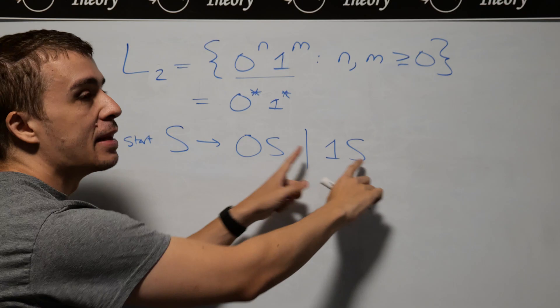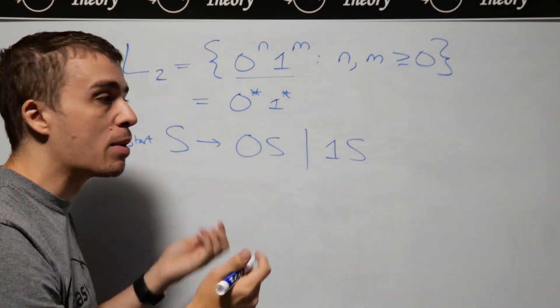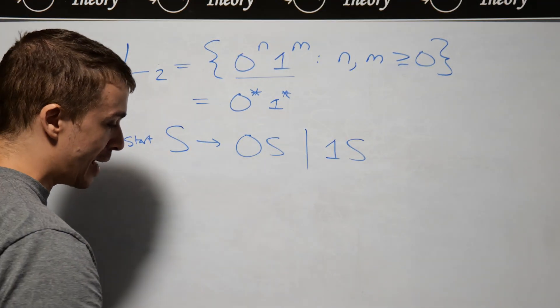then this rule, then this one, and then just go back and forth any way that we want. And this is a bad idea.